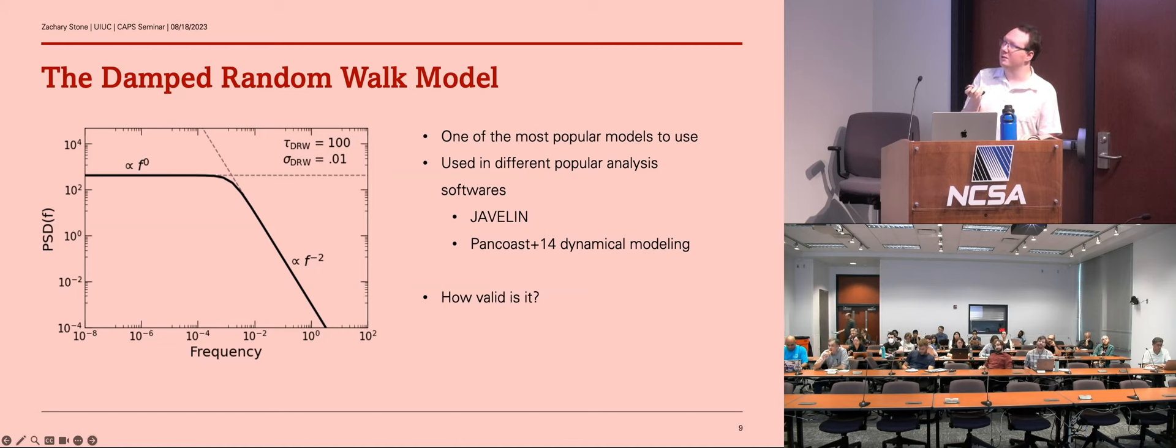But I'll just talk a bit about the model here. It's very simple. You can characterize it by its PSD here. It's got this white noise section at low frequencies. And after a certain characteristic break related to the timescale tau, it falls off as red noise or frequency to the minus two. And it only has two parameters, the timescale and this amplitude sigma. And it's used in a bunch of different models and softwares. But since it's used so much, how valid is it?